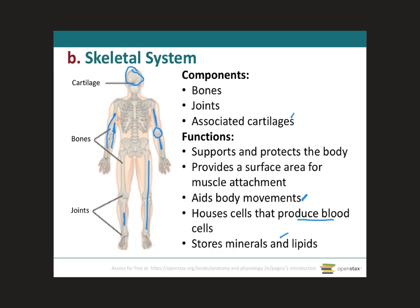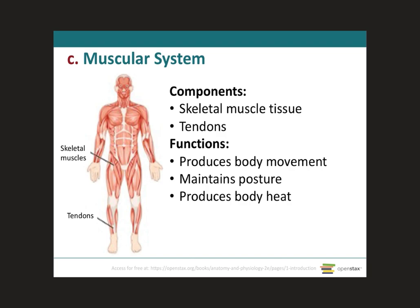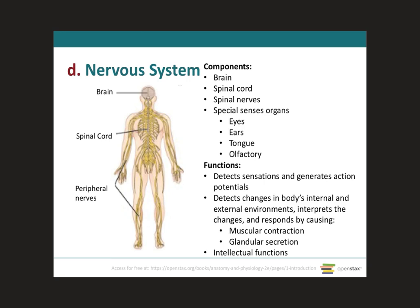The muscular system is composed of skeletal muscle tissue and tendons, which insert on bones. As they contract, they allow production of movement and help maintain posture and pressure. Muscle contraction also generates body heat through the oxidation of glucose molecules to produce ATP. We will discuss this in more detail when we get to the muscular system in module eight, which is the last organ system we will cover in this course.